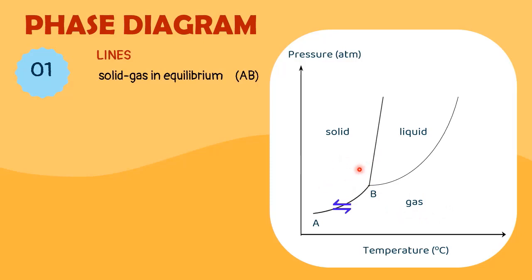At every point along line B and C, the solid melts at the same rate in which the liquid will freeze. While along B and D line, the liquid boils to form gas and the gas condenses to form liquid at the same rate.